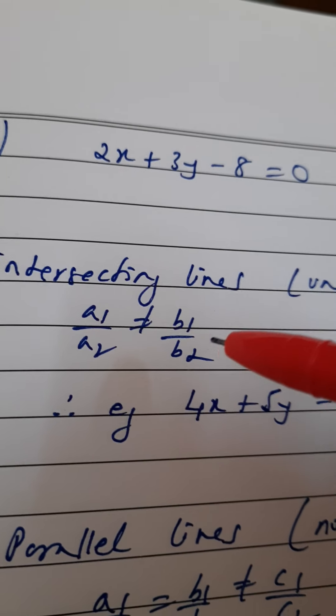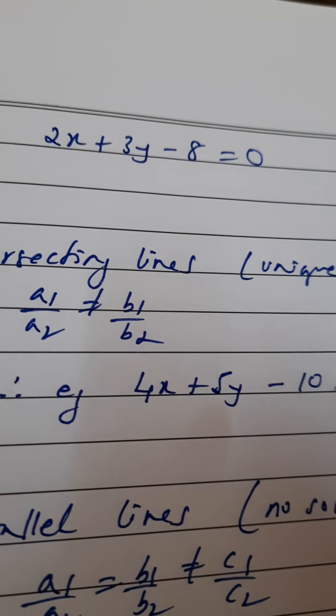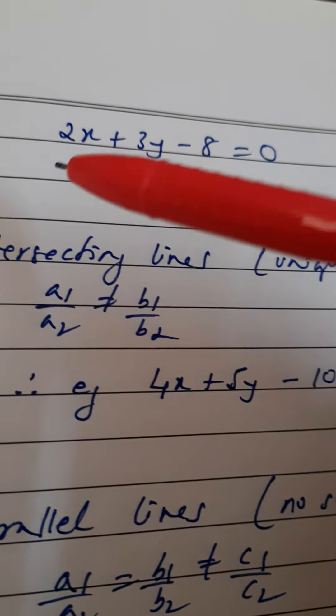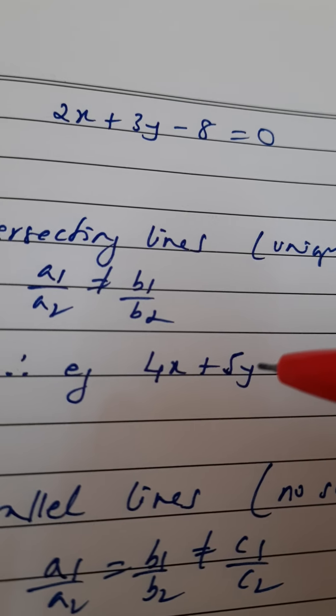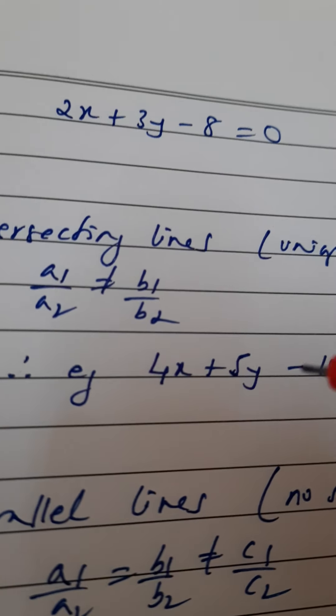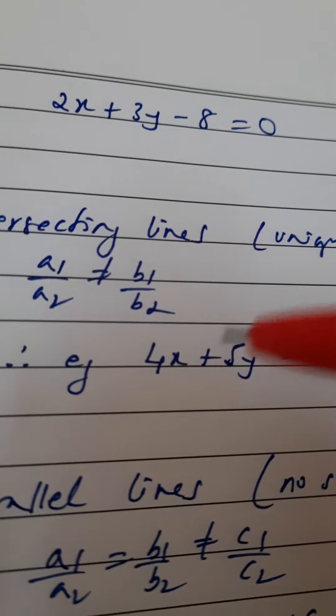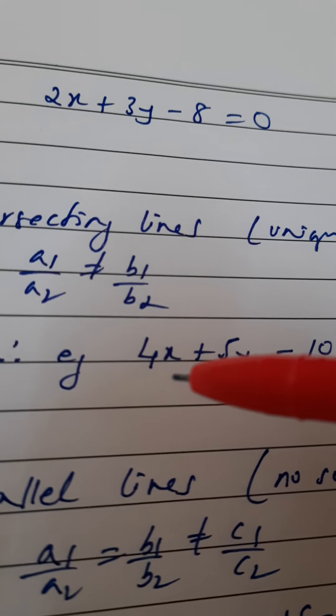That means I can write down any equation where when I compare a1/a2 and b1/b2, they should not be equal to each other. This is one example; there are infinite examples. I have written a1/a2 here—this is 2 by 4, the ratio is 1 by 2, and here I have written 3 by 5.